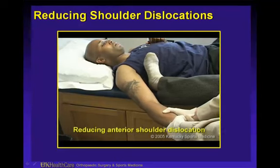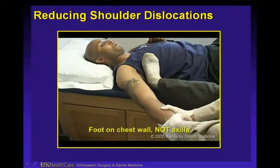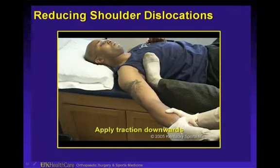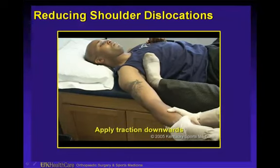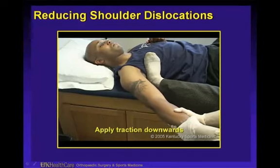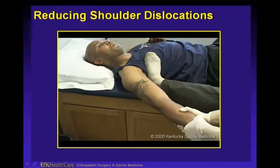What's the best way to reduce an anterior dislocation? I like the Hippocratic method — putting my foot on their chest wall, not on their axilla, so you don't injure the axillary neurovascular structures. Apply traction downwards and lean into them. You need a bench or you can do it on the ground — a wide enough table or bench. With gloves on, apply axial traction and oftentimes it will go into place. There are other ways to do shoulder reductions — get used to doing it the way that works in your hands and practice on each other.